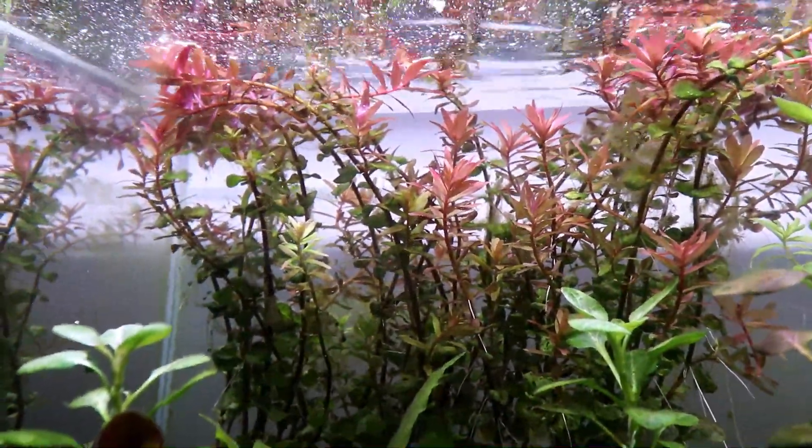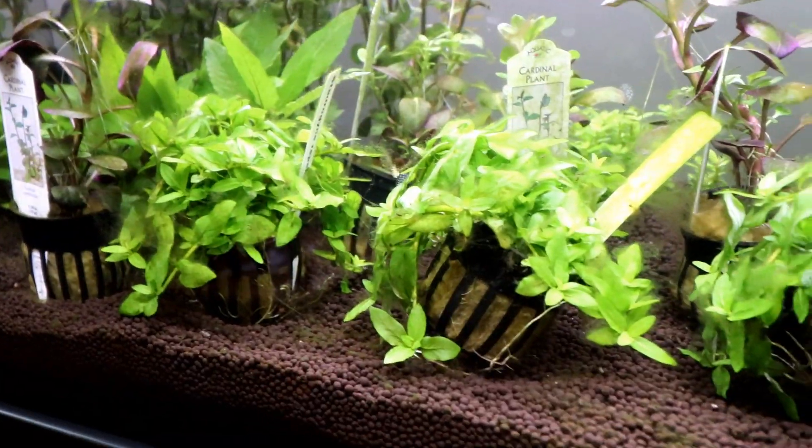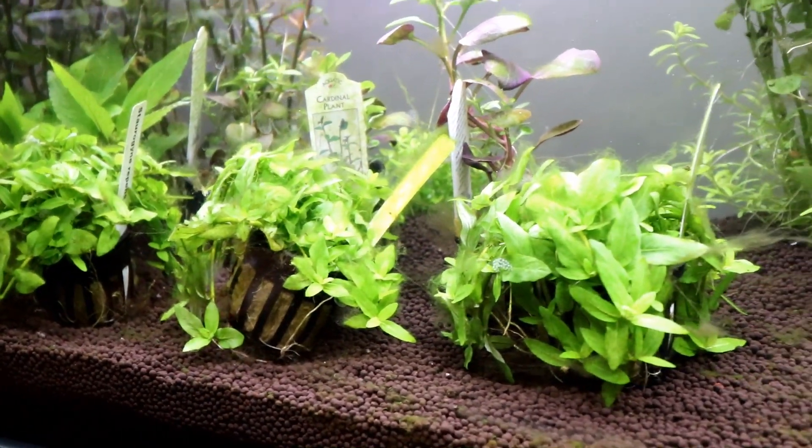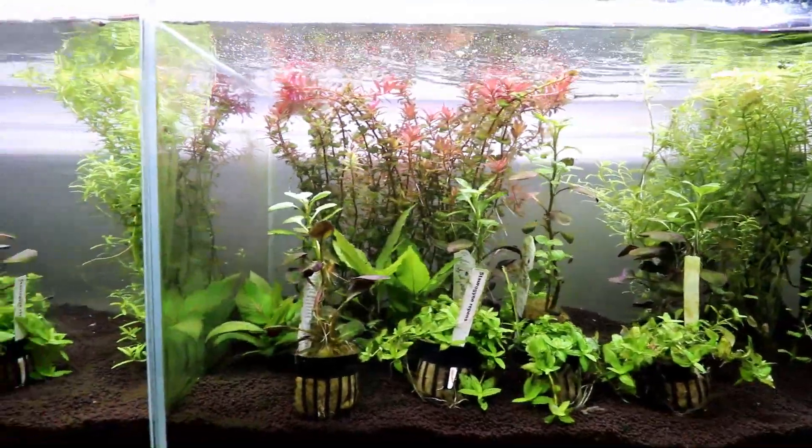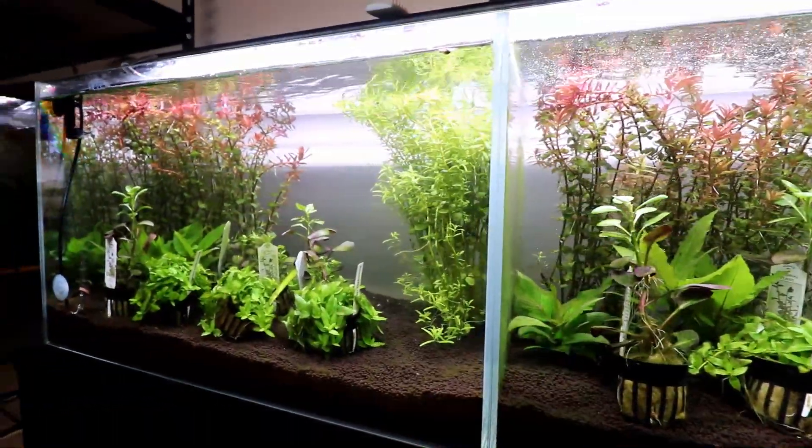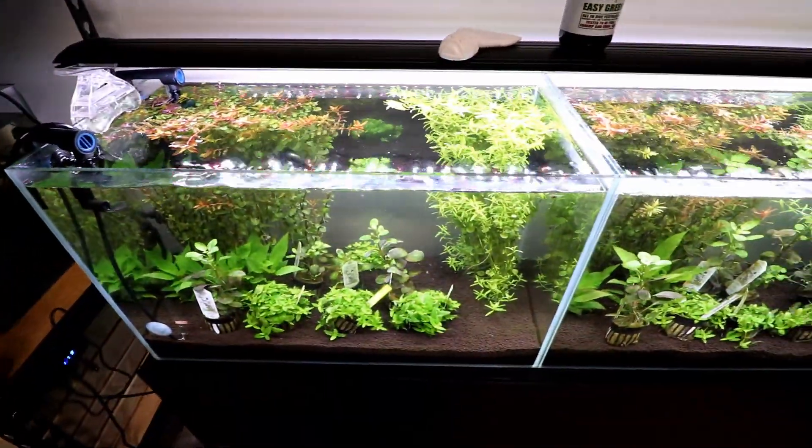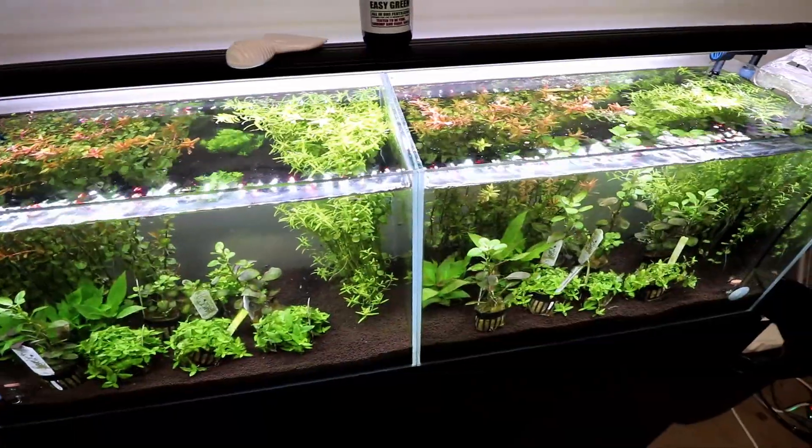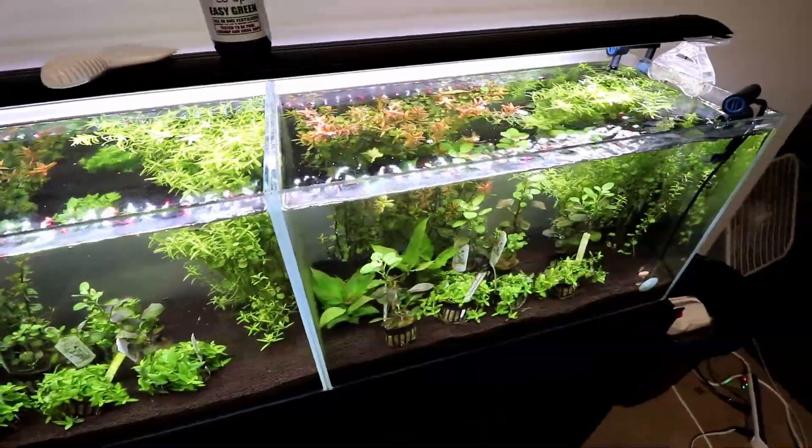We need to thank Waterbox Aquariums once again for supplying us with these two 16-gallon tanks that we have side-by-side here. They're rimless, they're low iron, their high clarity, and it makes taking pictures of the comparisons for whatever we're doing in the two tanks really nice. Make sure you guys check the link in the description for Waterbox Aquariums, check out all the different tanks that they have, freshwater, saltwater, whatever you're into.